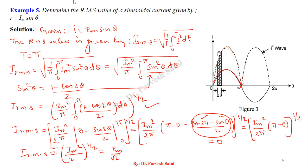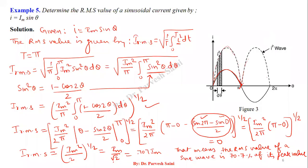So I_rms = Im/√2 ≈ 0.707 Im. This means that for any sine wave, the RMS value is 70.7% of its peak value. This result holds whether you take T = π or T = 2π for a pure sine wave.